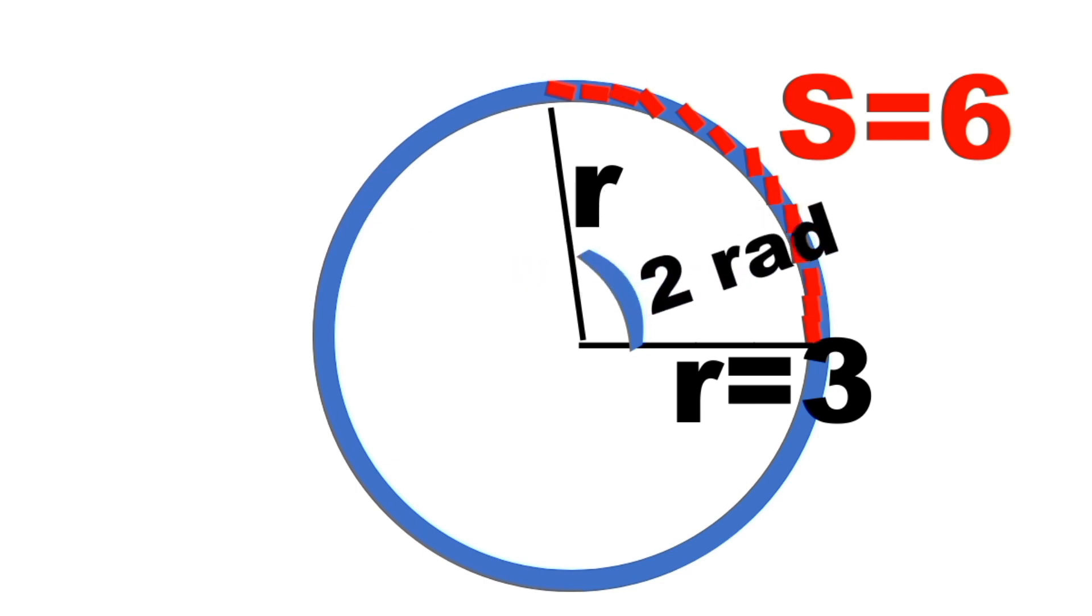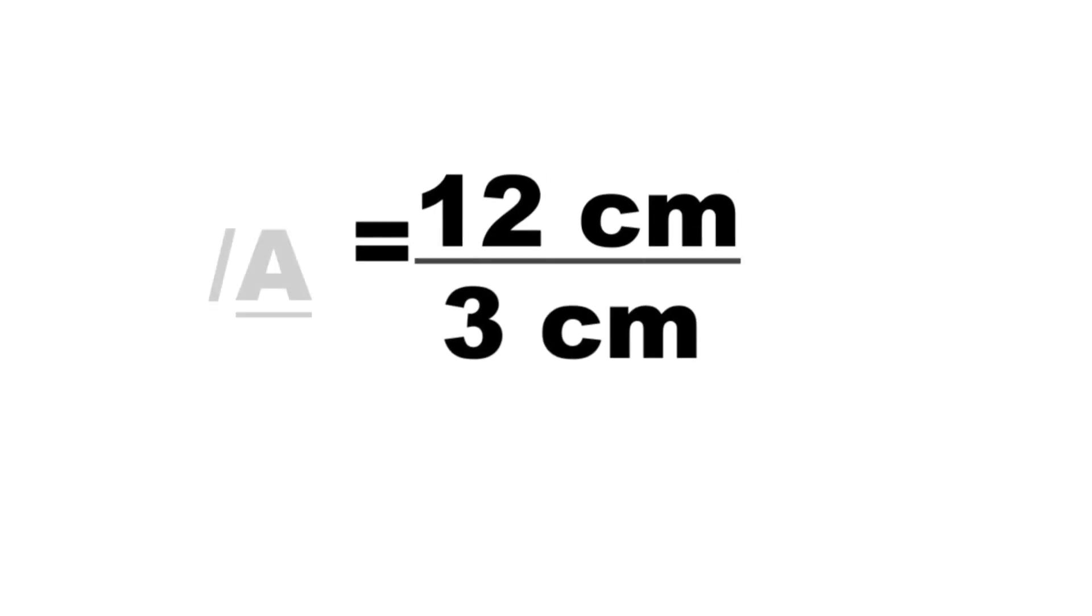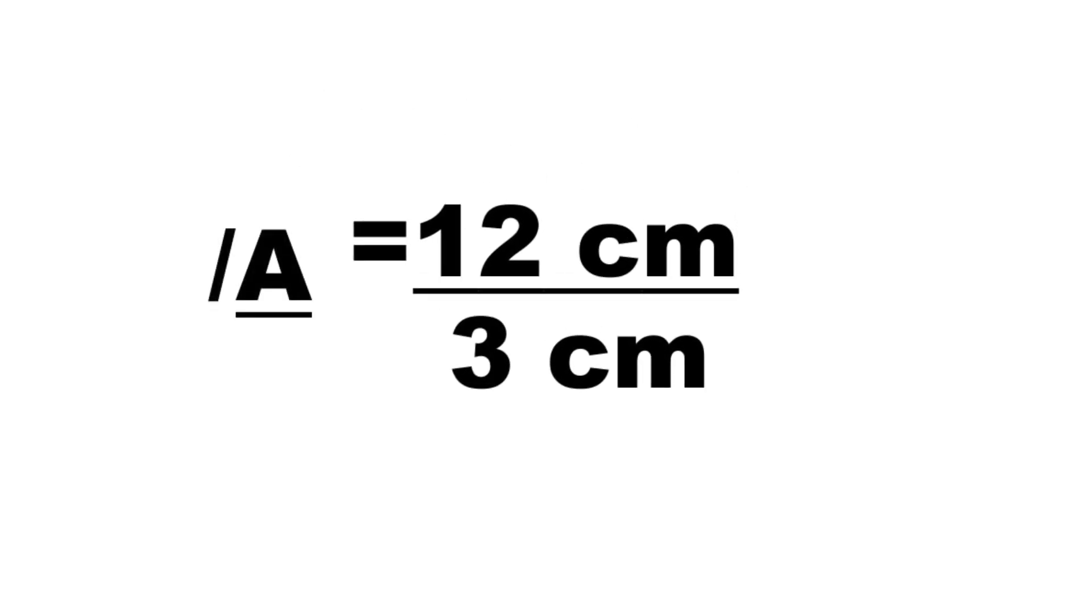To find the measurement of an angle in radians, we just simply divide the arc length by the radius, and they should be in the same unit of length. For example, if the arc length is in centimeters, then the radius must be in centimeters also.